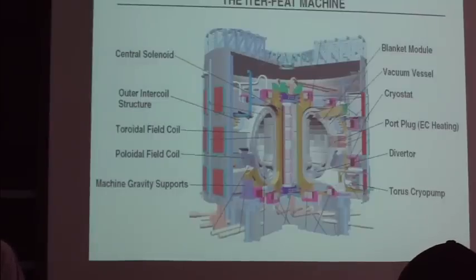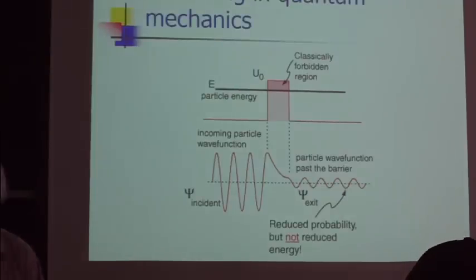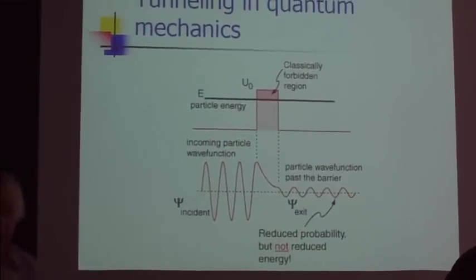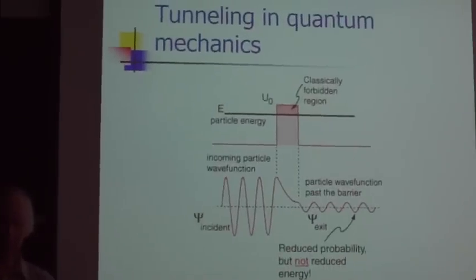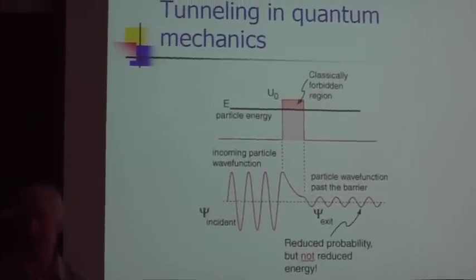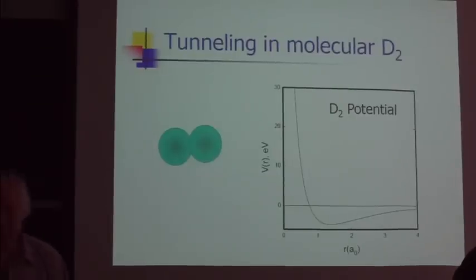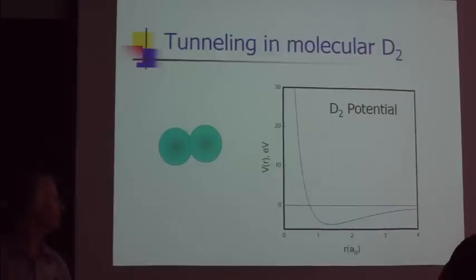Ion kinetic energy can be sufficiently fast to overcome the Coulomb barrier. Now, if you don't have enough energy to overcome it outright, you can still get through it like normally. And if you have molecular D2, the two deuterons being fused together, it can tunnel through together.